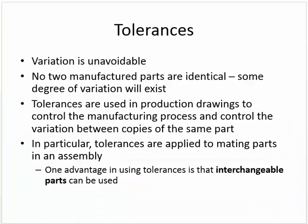Welcome back. Today we're going to be discussing tolerances. Variation is unavoidable — no two manufactured parts are identical. Some degree of variation will exist, meaning they're going to be very similar, but because machines vibrate and pieces move, nothing's going to be exactly the same. Tolerances are used in production drawings to control the manufacturing process and control the variation between copies of the same part. In particular, tolerances are applied to mating parts in an assembly.